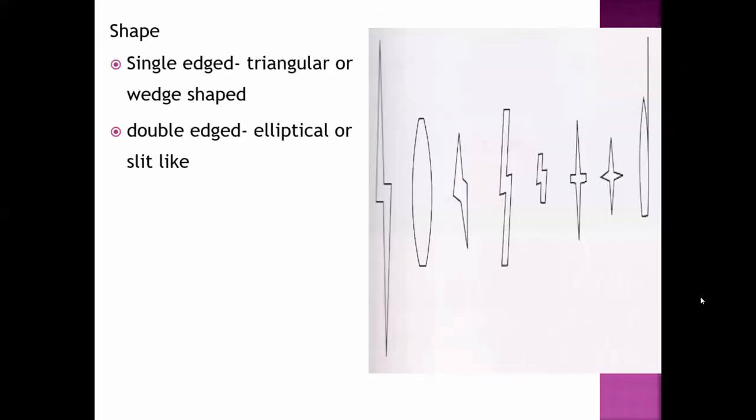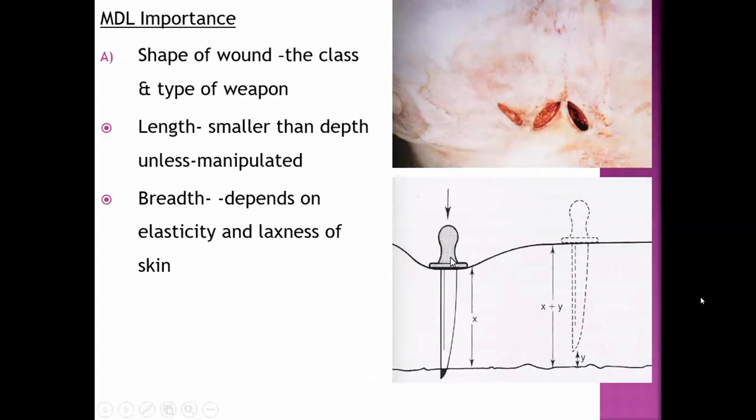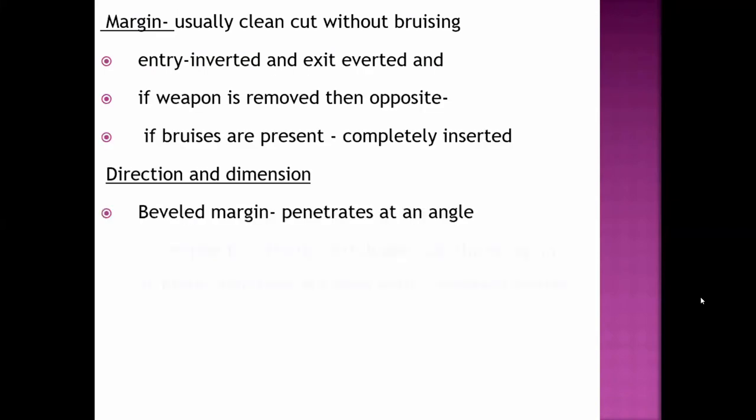Let me show you a picture. This is the picture where the whole instrument is inserted inside the body and you don't see any bruises in the margin. But near to the margin, you can see some kind of bruising present, which is known as hilt mark injury. Since this hilt is blunt, it produces contusion. If the force is extreme and is inserted in the body, then you can see hilt mark injury, which determines that the weapon was completely inserted inside.